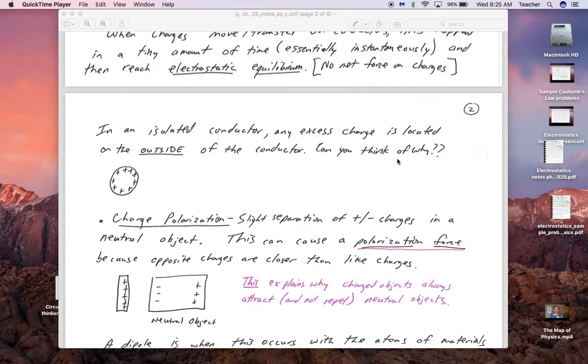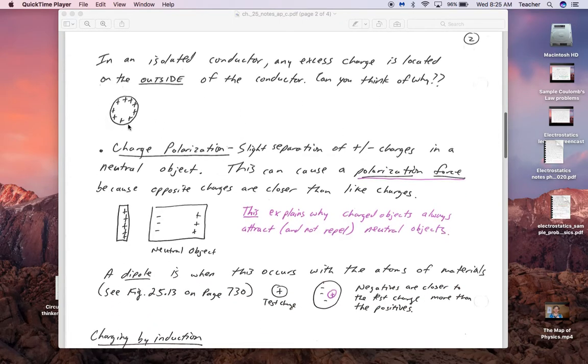In an isolated conductor, any excess charge is on the outside. Well, why? They repel each other. If it's a nice uniform shape like a sphere, they're evenly spaced. If it's not a nice uniform shape, like pear-shaped or avocado-shaped, we notice the charges tend to accumulate at the points of the conductors.